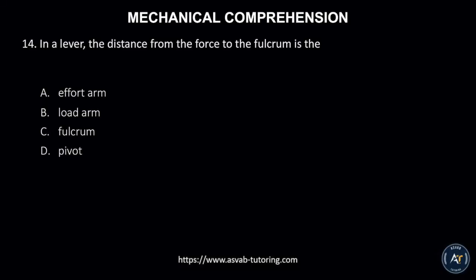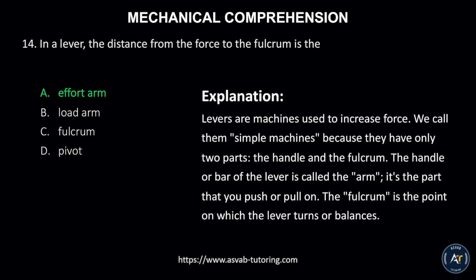Number 14. In a lever, the distance from the force to the fulcrum is the: A. Effort arm, B. Load arm, C. Fulcrum, or D. Pivot? The correct answer is A. Effort arm. Levers are machines used to increase force. We call them simple machines because they have only two parts: the handle and the fulcrum. The handle or bar of the lever is called the arm — it's the part that you push or pull on. The fulcrum is the point on which the lever turns or balances.